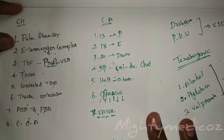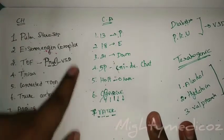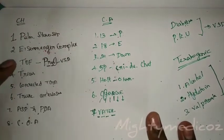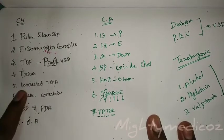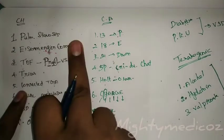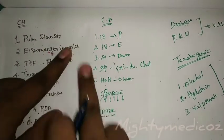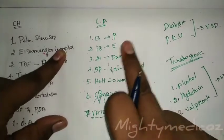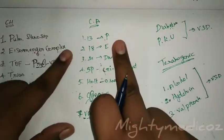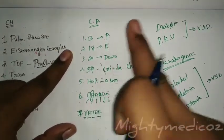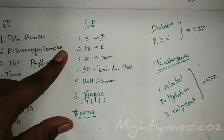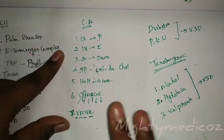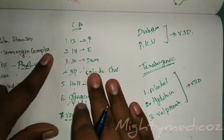If once VSD has been found, we should look for other congenital heart diseases associated with it. Features of chromosomal abnormalities — Patau syndrome, Edwards syndrome, Down syndrome, Cri-du-chat syndrome — are visible in other body parts, and that is why we should check for VSD in those cases.